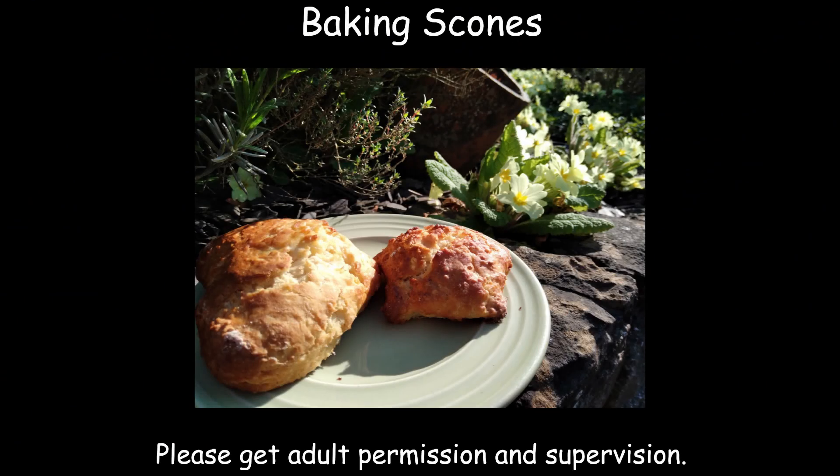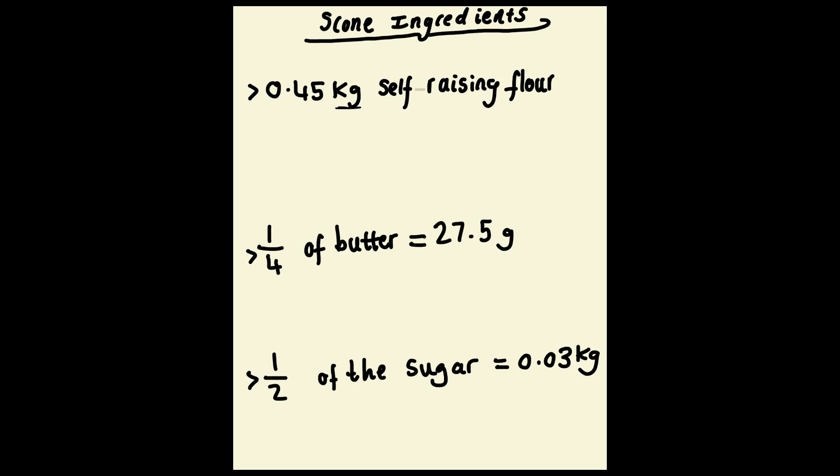So today we're going to be baking scones. You're going to need adult permission and supervision. Firstly, we need to work out how many ingredients we need using maths. I know that one kilogram equals one thousand grams, so to convert kilograms to grams we need to times by 1000. 0.45 times 1000, because remember we measure heavier objects in kilograms like ourselves and lighter objects in grams.